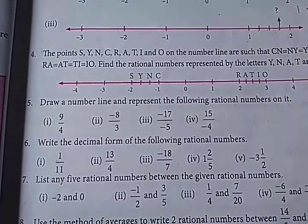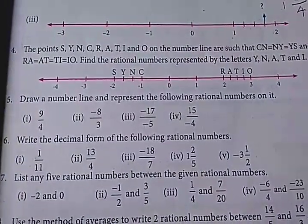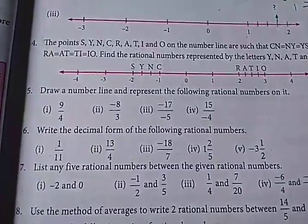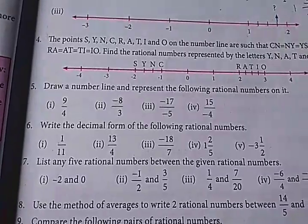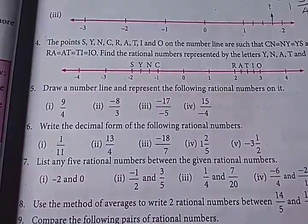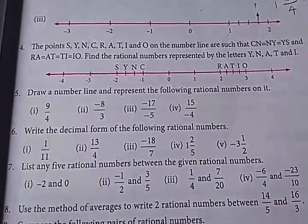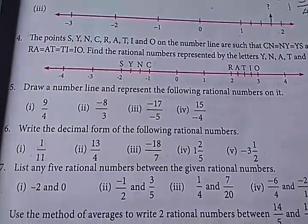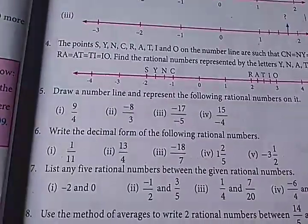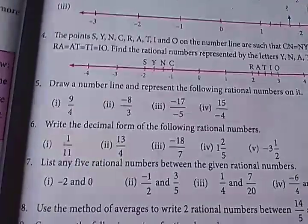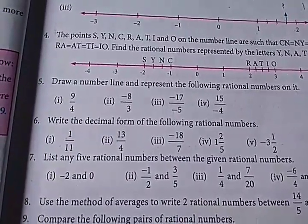So next question: draw a number line and represent the following rational numbers. So what do we do with the rational number — we mark a point. Draw a number line and represent the following rational numbers. So two sums I will try; the remaining two sums are today's homework.